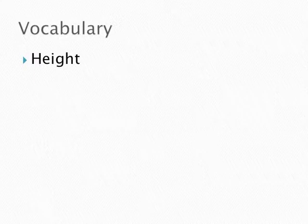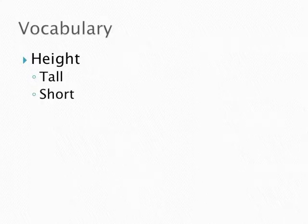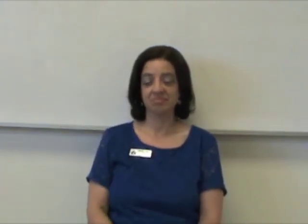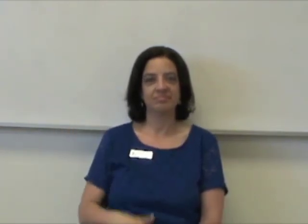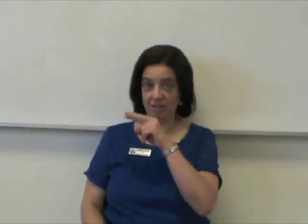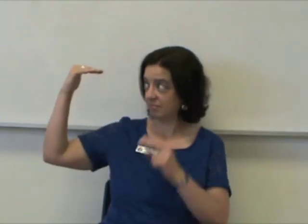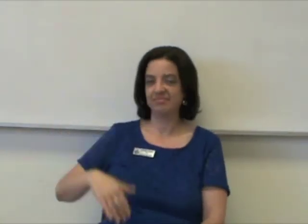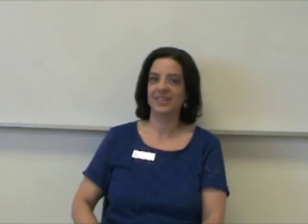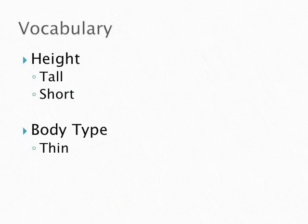Then we talk about height. You can talk about whether a person is tall or short. For short, your hand moves down instead of up. If I look at the person, that means it's compared with my height — so that means this person is a little shorter than I am, or a little taller than I am, because I'm looking at them compared to me.